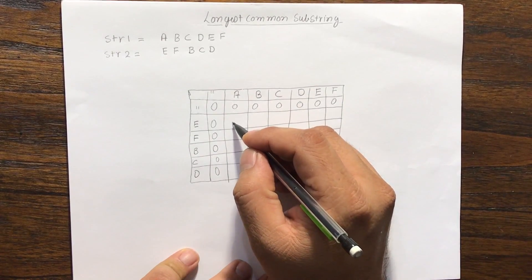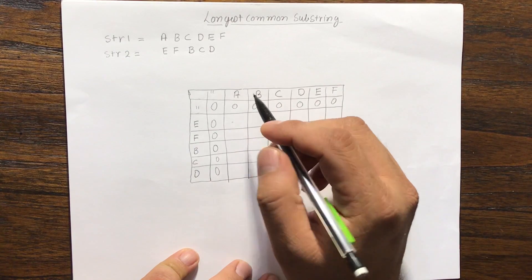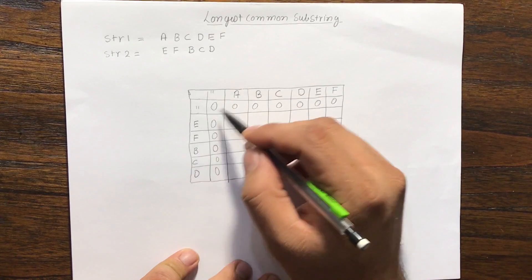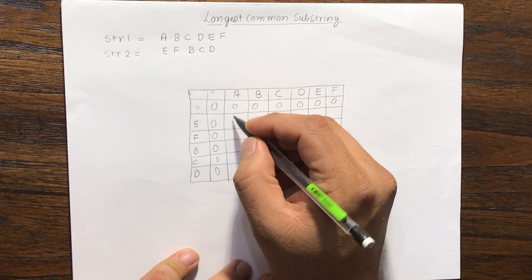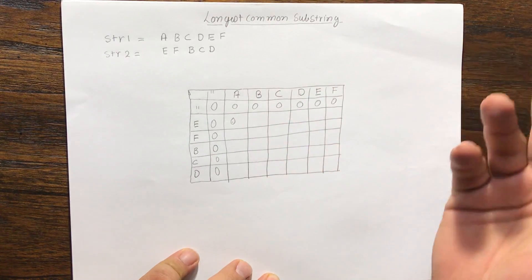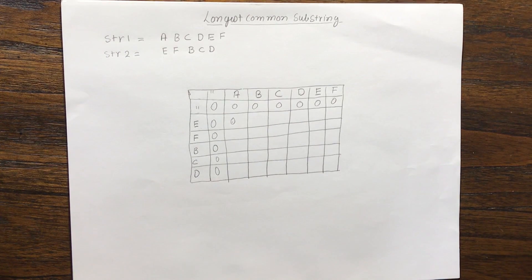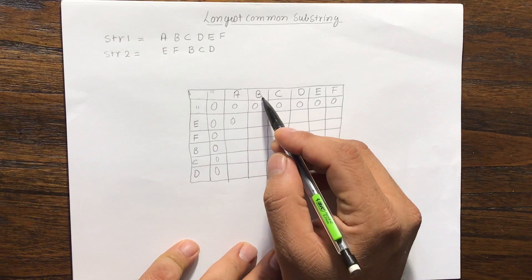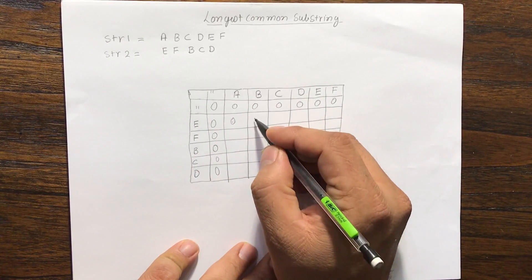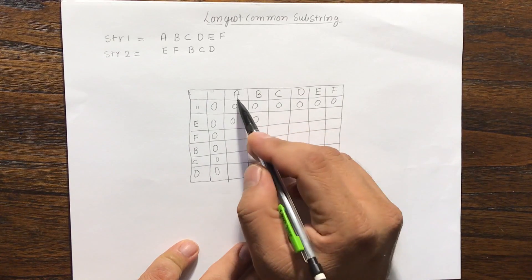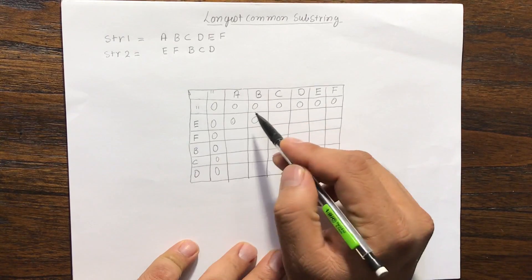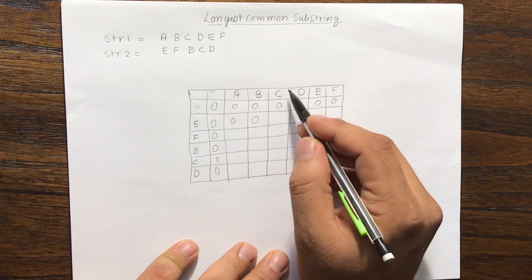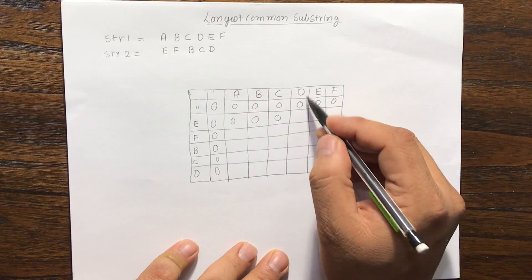Next, we start filling from index i=1, j=1. We check: if e and a - if the first string character is a and the second string character is e - do they match? They don't match, so we put a 0. If they do not match, the length of the substring will be 0, because even if previous characters matched, this breaks the continuity. So we continue: b and e don't match - 0; c and e don't match - 0; d and e don't match - 0.